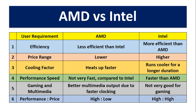And coming to gaming and multimedia, there is better multimedia output due to faster clocking for AMD processor. And for Intel processor, it is not very good for gaming. And coming to performance and price, the performance of AMD processor is high and cost is low, whereas for Intel processor the performance is high and cost is also high.